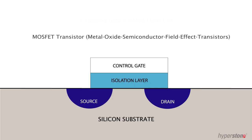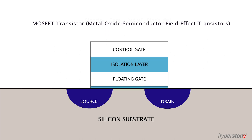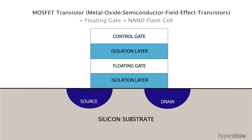NAND flash memories are based on MOSFET transistors with an additional gate called the floating gate. This gate can be found between two isolation layers and can store electrons even when the power goes out.